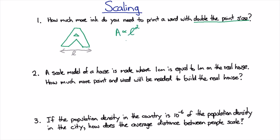So if I double the length, my area is going to be 2L all squared, which is going to be 4 times L squared. So if I double the length, I'm going to quadruple the area. So how much more ink? I need 4 times as much ink.